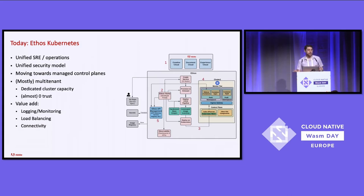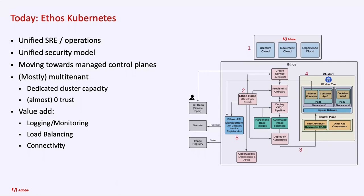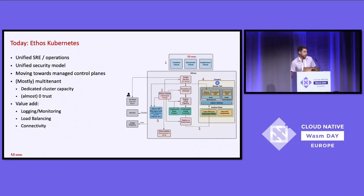Along that journey, where has it gotten us today? Kubernetes has been very successful given those numbers. We still have a unified SRE operations model, a security model that other teams onboard to by default, and we're still mostly a 12-factor app-based, multi-tenant system. The idea is we can provide this basic platform for hosting services, be cloud agnostic and platform agnostic. We can run containers as a service, streaming workloads — essentially provide infrastructure as a service with an additional set of value-add components on top.